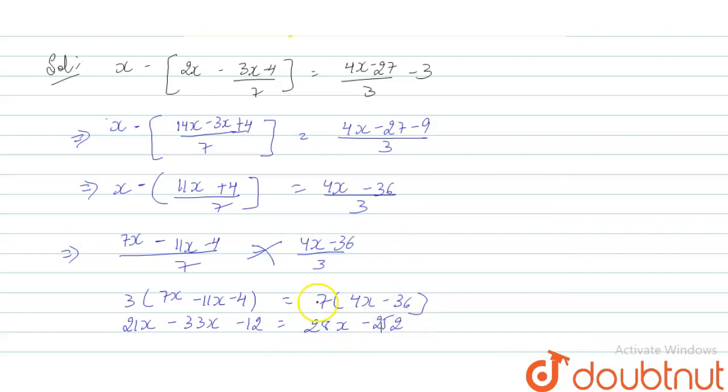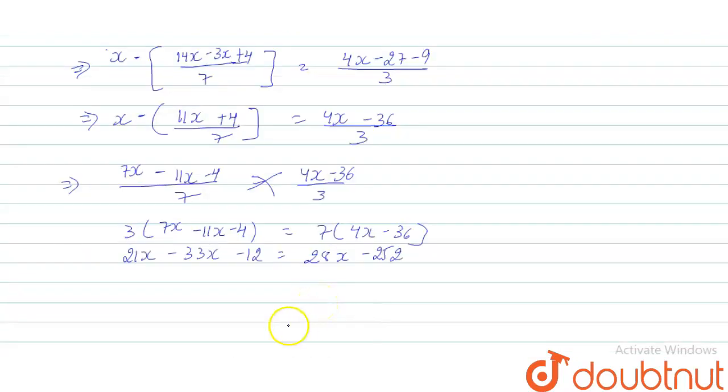This results in 21 minus 33 which is minus 12x. So minus 12x minus 12 equals 28x minus 252.